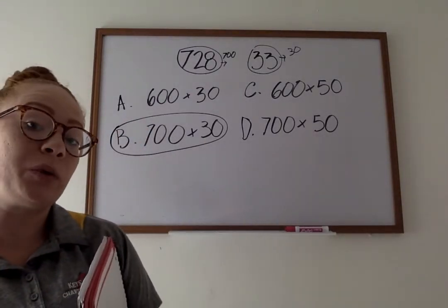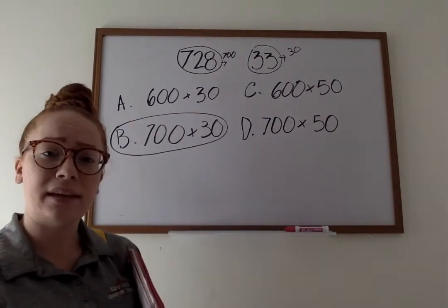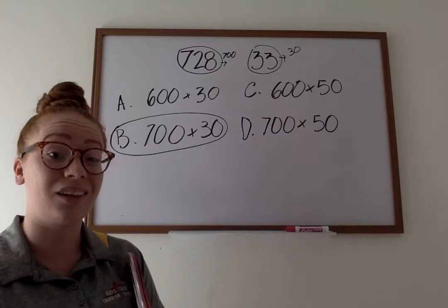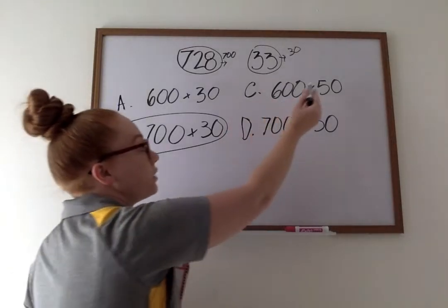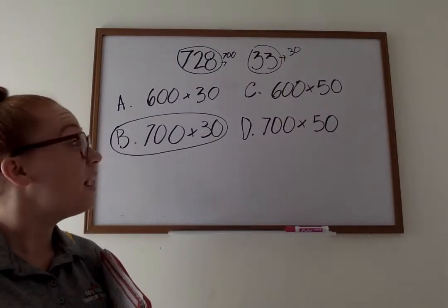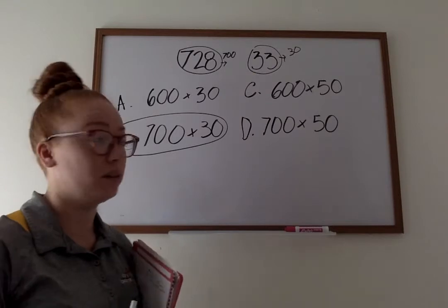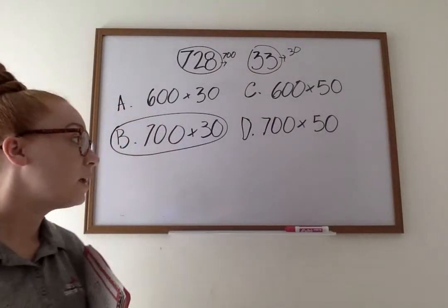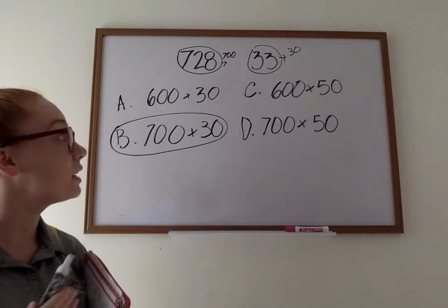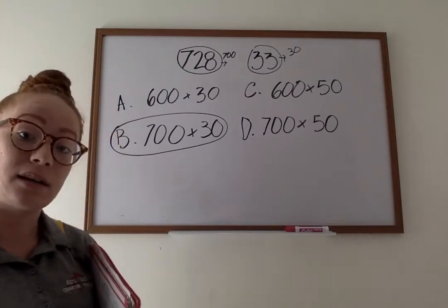Now let's talk through why the other ones would not be correct. A says 600 times 30. It has 30, but it's saying 600. 600 is not a good estimate for 728 because it's 128 off. That's a lot. C says 600 times 50. Now this one has 600 where it's off by 128. That's a lot. And then by going 50, it's off by around 20. So that one's too far off. And then D says 700 times 50. Again, that 50 comes up. The 50 is too far away from our 33. And the 700 is exactly what we wanted, but that 50 is where it is not what we want. So it's not going to be D either. That's how we know that B is our best option.